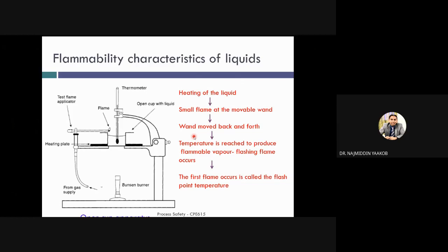It is an apparatus in order to determine a flammable characteristic or flashpoint of a chemical substance. You have a Bunsen burner, you have the liquid that you want to test. You immerse it with a thermometer and you have a test flame applicator with flame. When the heat is continuously heating the chemical, at one point it will release a vapor. This vapor, the flame will ignite the vapor, so the first flame that occurs here is called the flashpoint temperature, which is recorded at this thermometer. This is how you determine the flashpoint of a chemical.